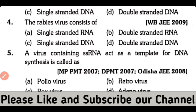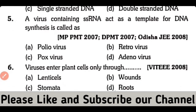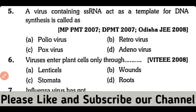Question number 4. The rabies virus consists of single-stranded RNA, double-stranded RNA, single-stranded DNA, or double-stranded DNA. So the correct answer is option A. Rabies virus contains single-stranded RNA.